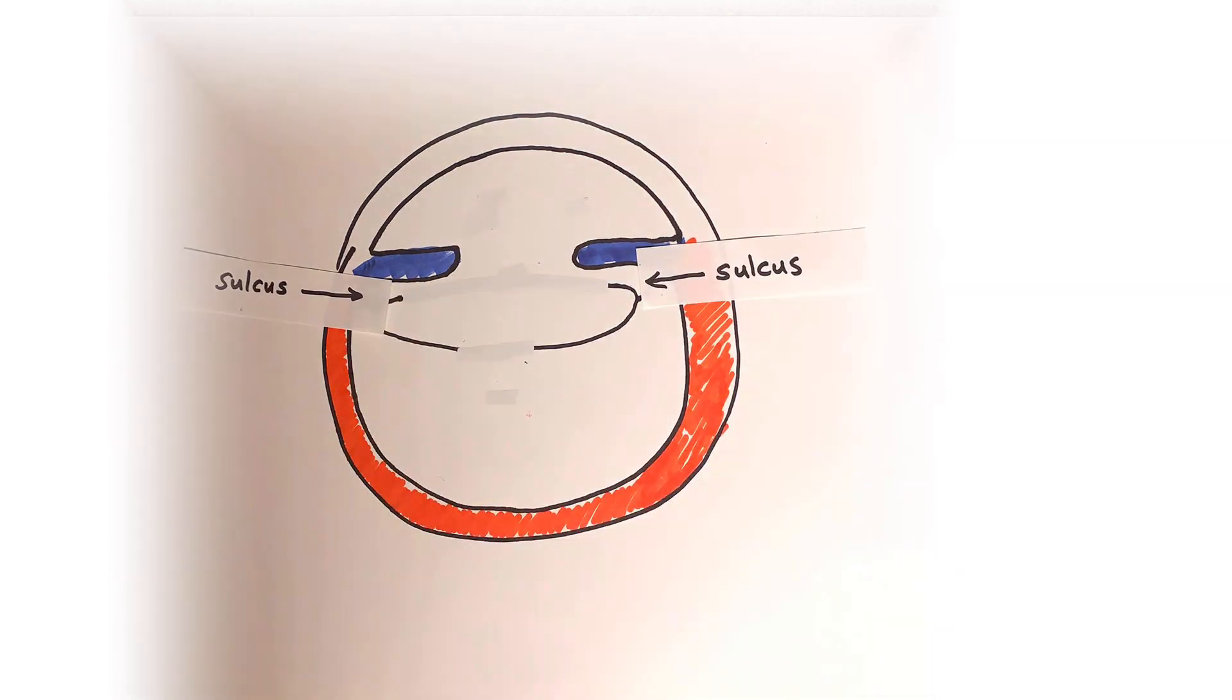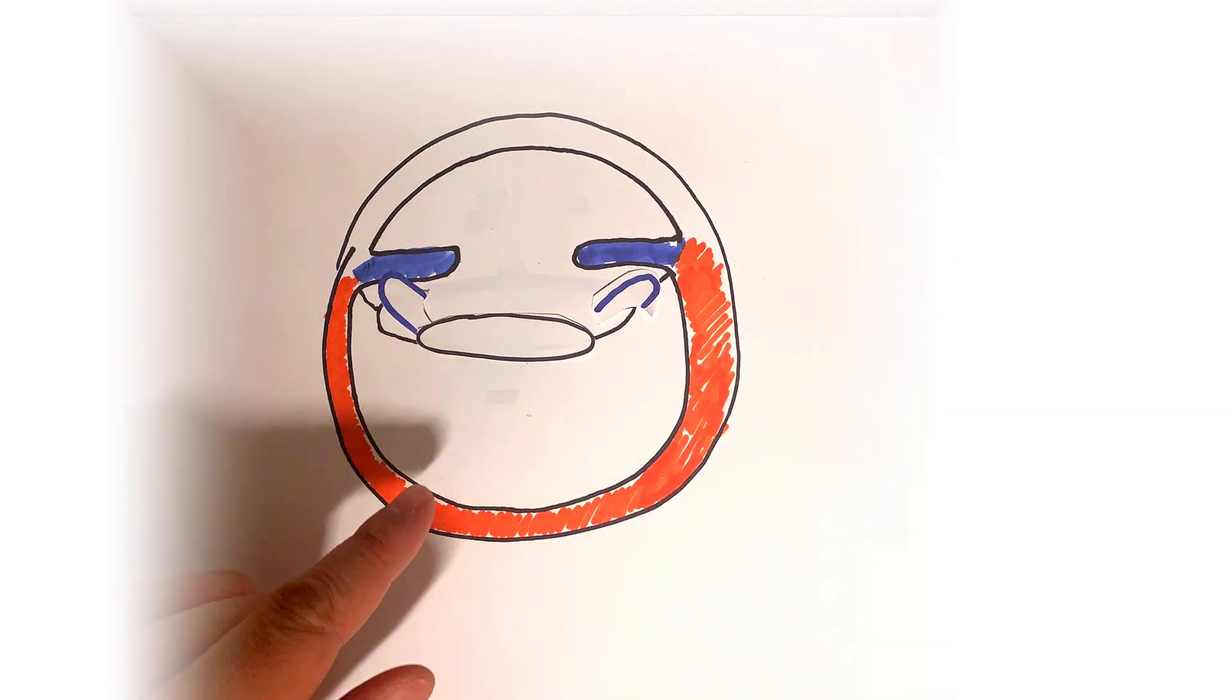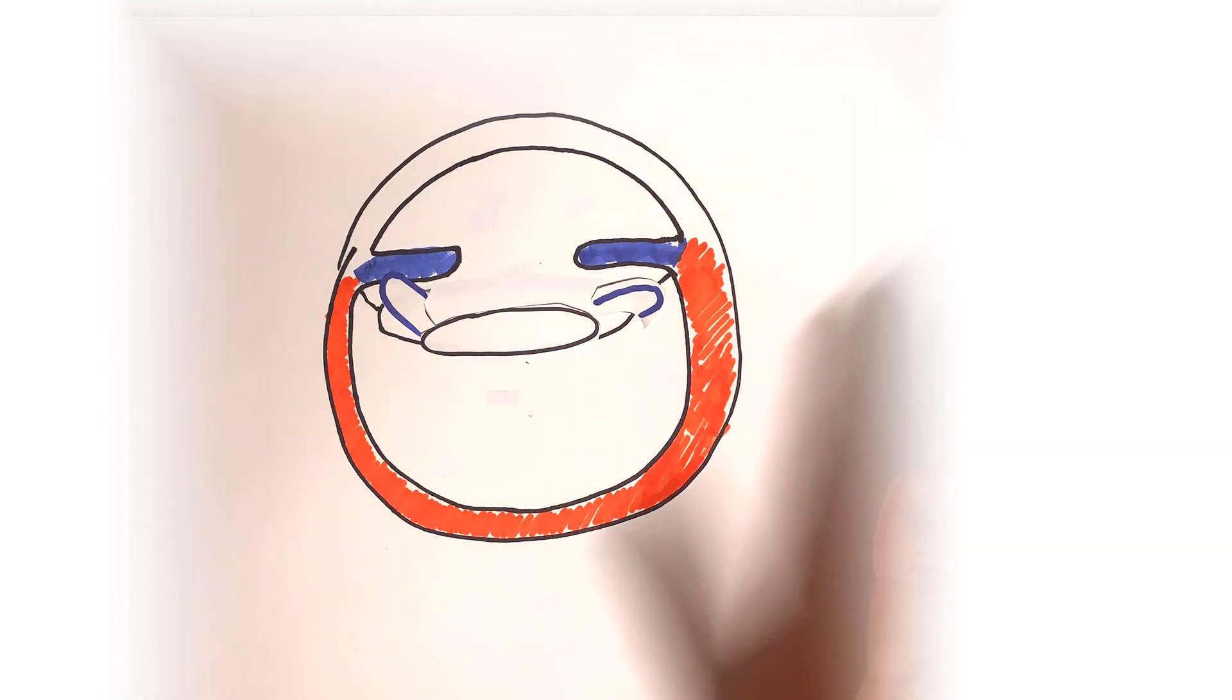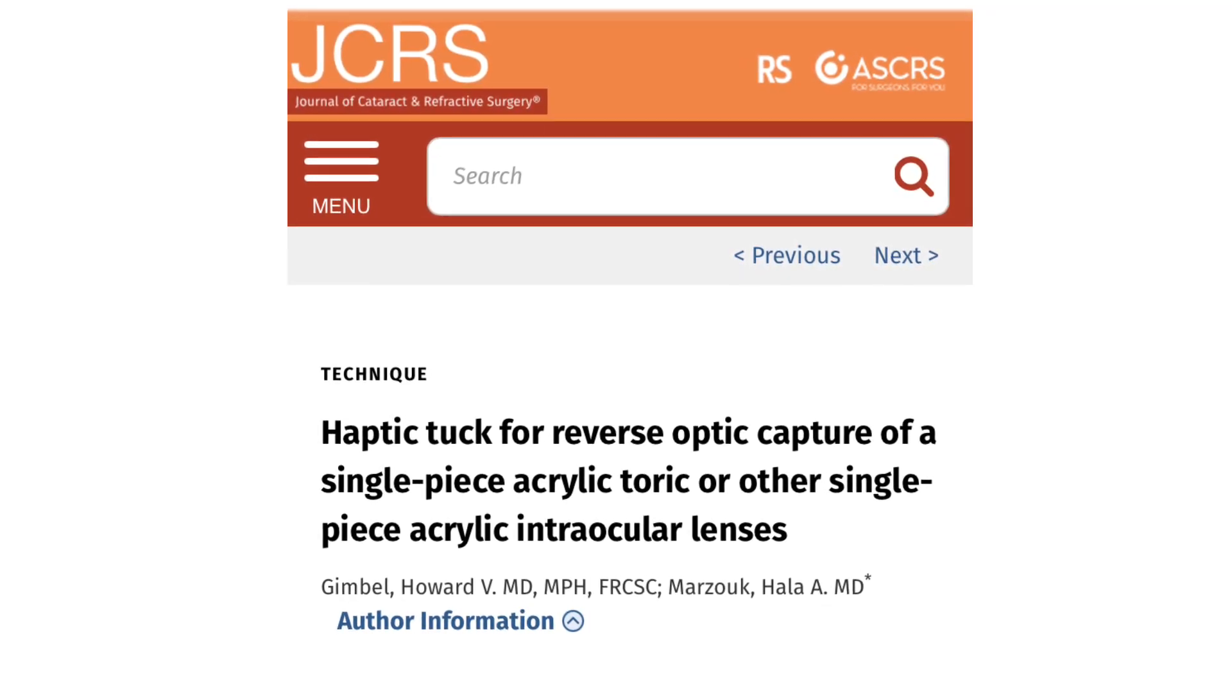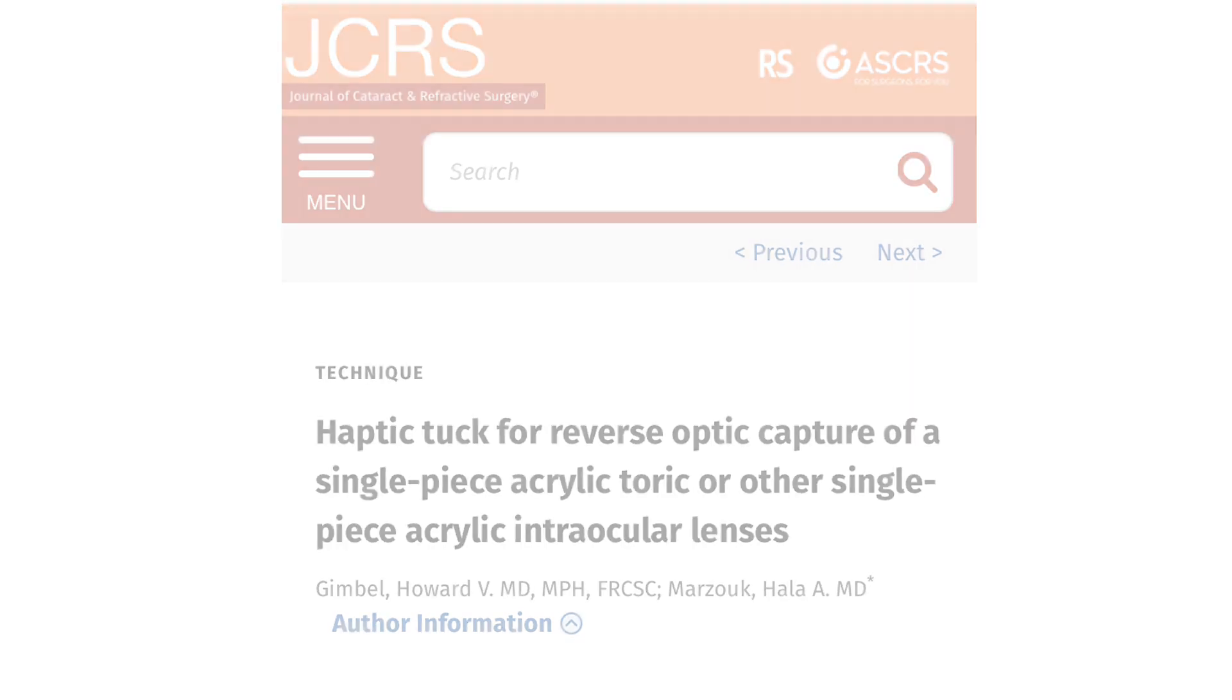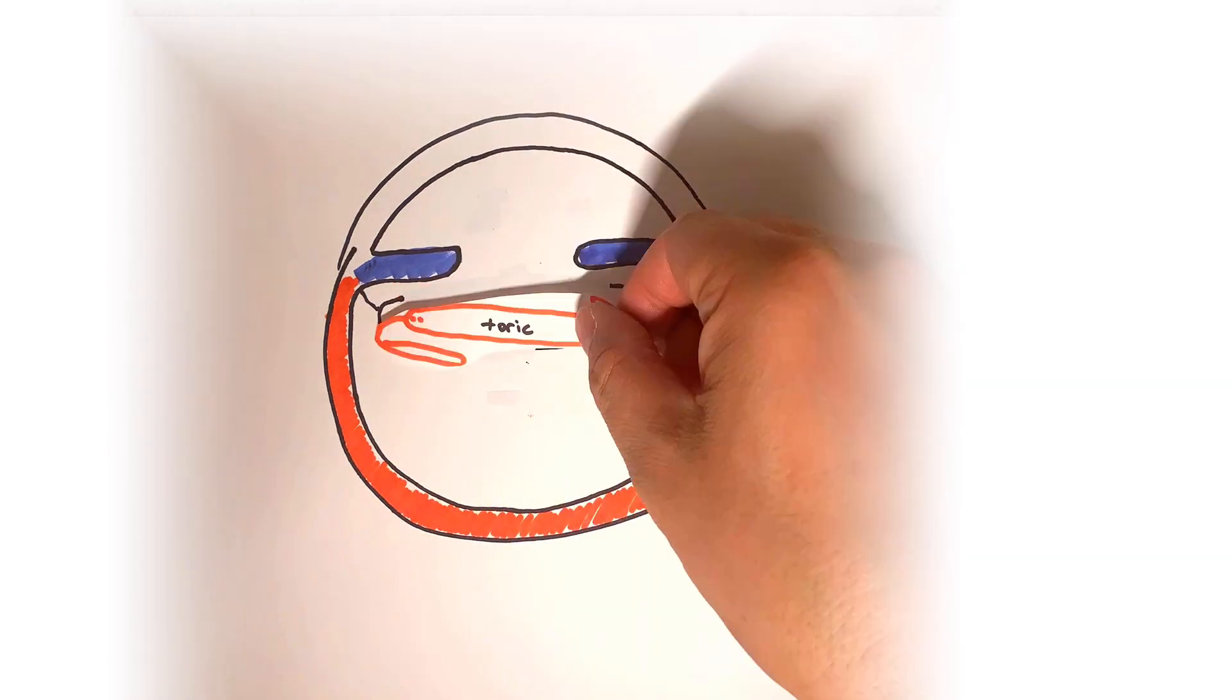Once secured with optic capture, the entire lens complex is unlikely to decenter and dislocate. Two years ago, Dr. Gimbel expanded on the optic capture technique and devised a toric haptic tuck for reverse optic capture. What this means is that as long as there is an appropriate sized and centered anterior capsular rhexis, some surgical acrobatics in the right setting can allow your surgeon to implant a toric or multifocal lens implant.